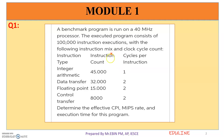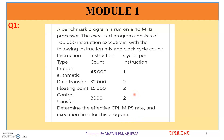We are going to talk about some type of questions about university exams. The benchmark program is run on a 40 MHz processor. The executed program consists of one lakh instruction executions with the following instruction mix and clock cycle count. We are going to talk about CPI and MIPS rate — this is the execution type of the complete program. These are the 3 questions.